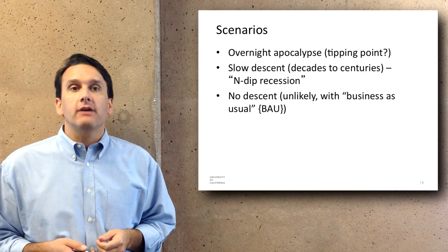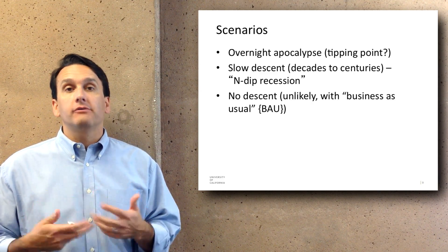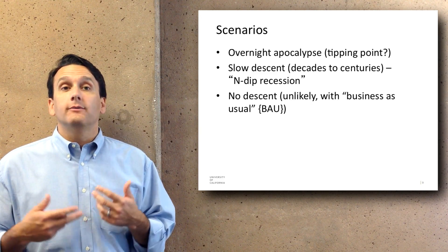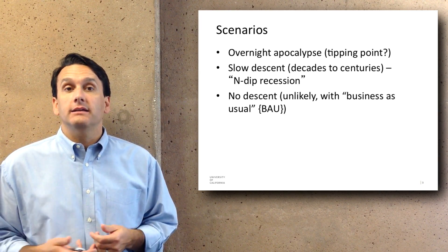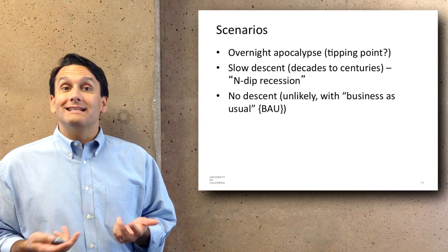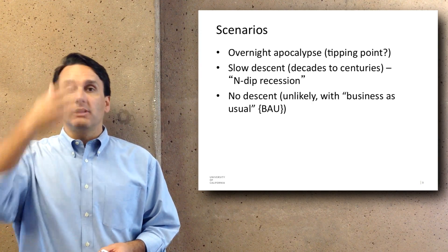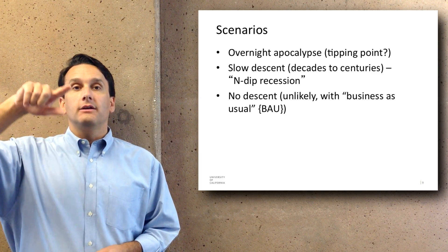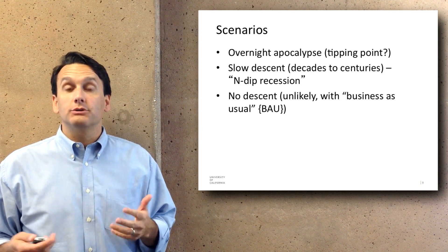We see there as being a variety of different scenarios. One would be an overnight apocalypse — some sort of tipping point where everything suddenly goes bad. Even though this makes a good Hollywood movie, it's not necessarily what most scholars think is likely to happen. Another way things could go is a slow descent over decades or centuries — effectively an n-dip recession. A recession is when the global economy goes into a slump; a double-dip recession is when you go into another recession just as you're coming out of one. Continuing down that path might be called an n-dip recession — a bumpy road down.